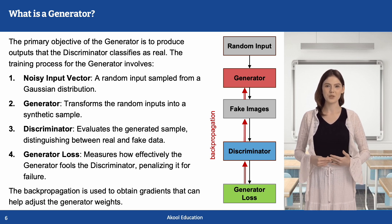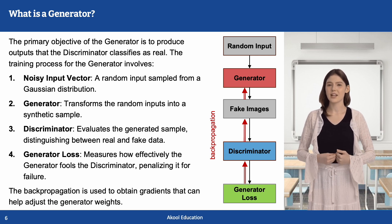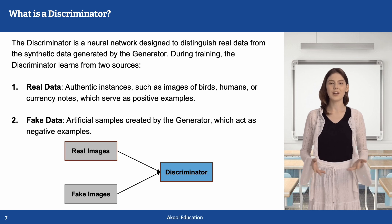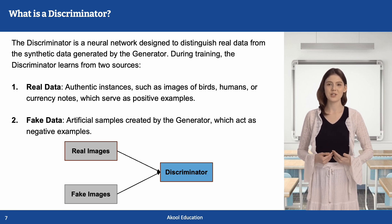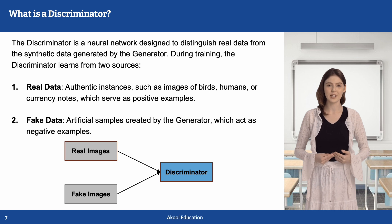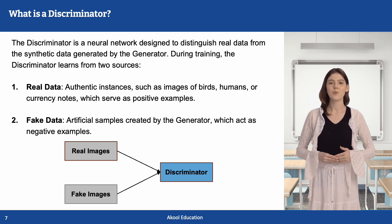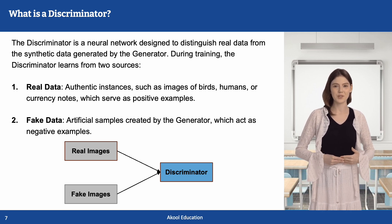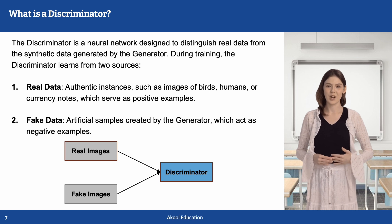Over multiple iterations, the generator refines its outputs, producing increasingly convincing fakes. The discriminator is a classifier trained to differentiate real data from fake data. During training, the discriminator learns from two sources: real data — authentic instances such as images of birds, humans, or currency notes — which serve as positive examples.